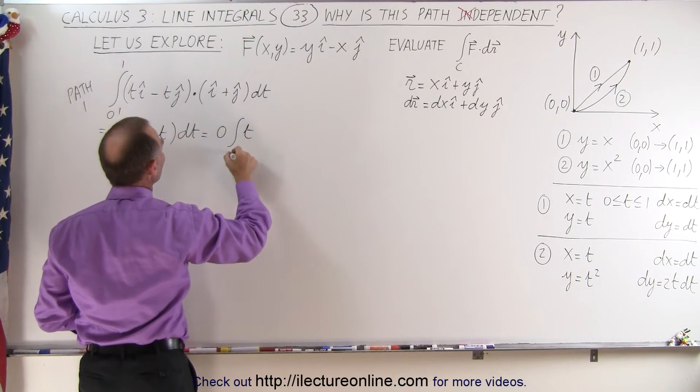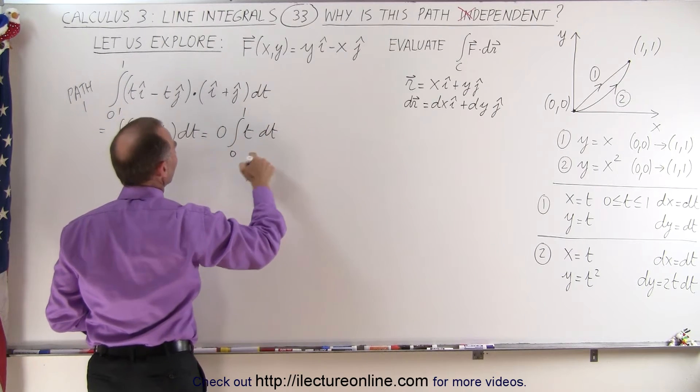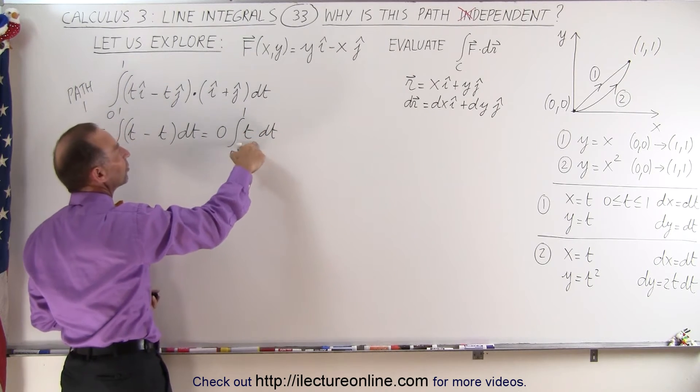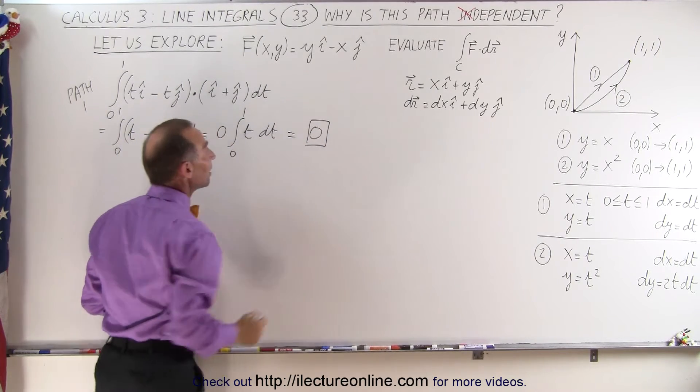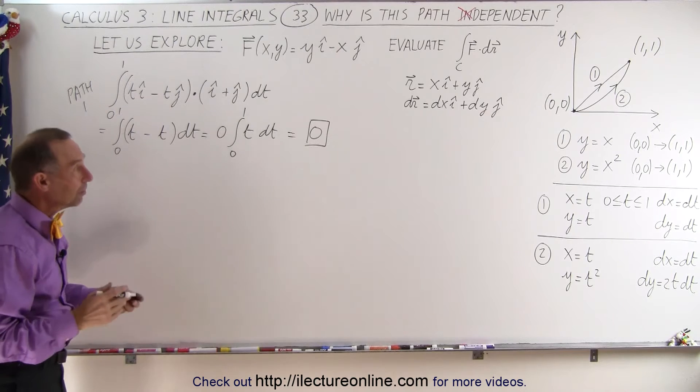which is equal to 0 times the integral of t from 0 to 1 dt. So it doesn't matter what this integral is equal to, since we multiply times 0, this is equal to 0. So that means that that line integral is equal to 0.